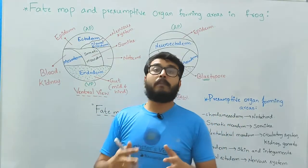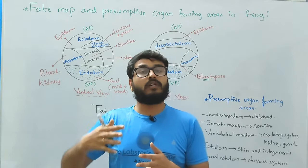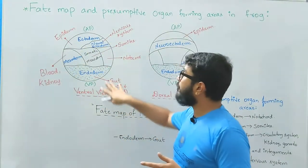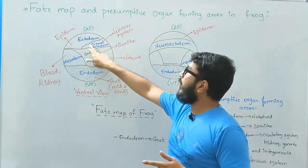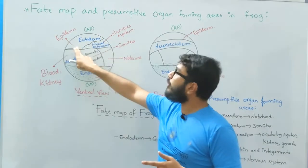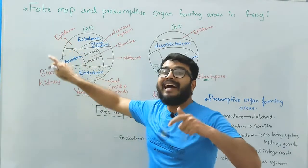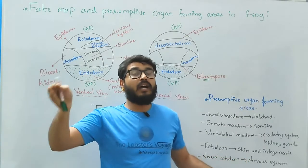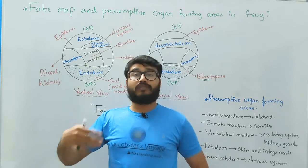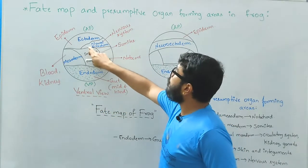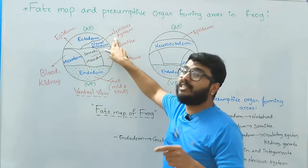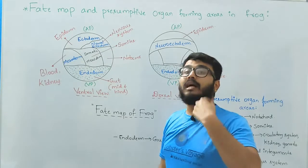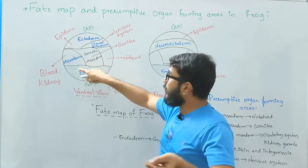Now looking into the presumptive organ forming regions of the frog embryo. When you look at this particular fate map and focusing on the ectoderm, ectoderm is further differentiated into the epidermis that gives the integumentary system - that is skin and the outer covering - in the later stages of development. Also, it forms neural ectoderm which is the major source of the formation of the nervous system.